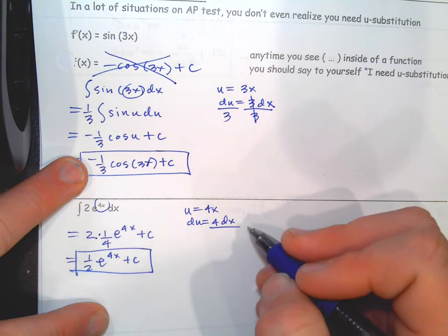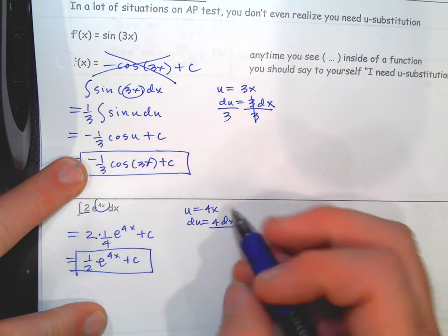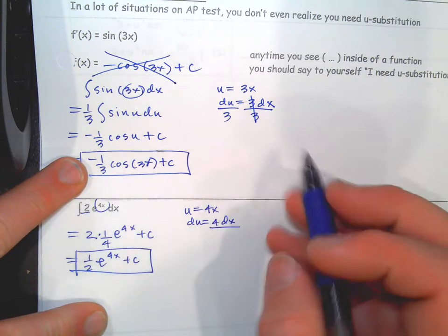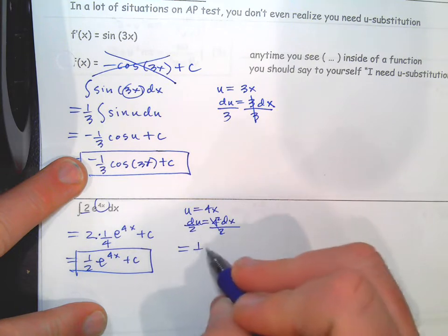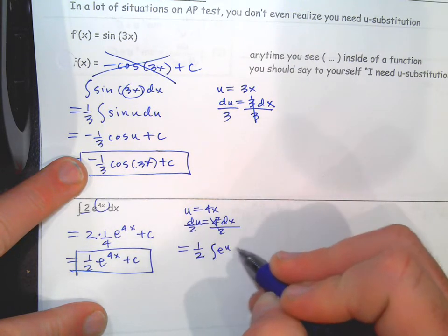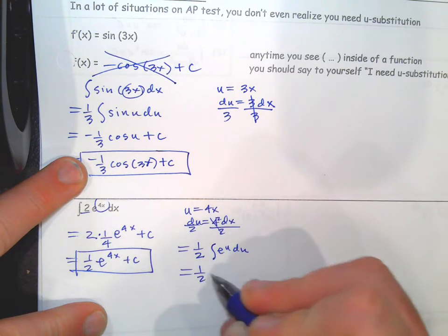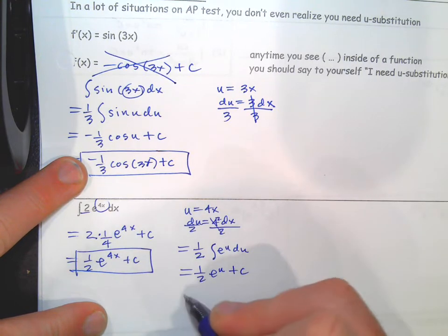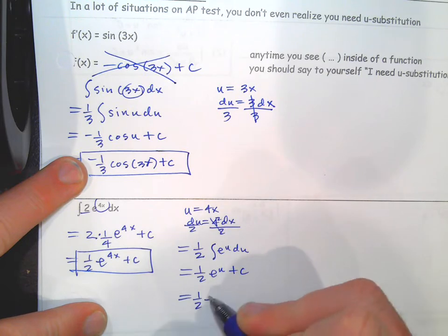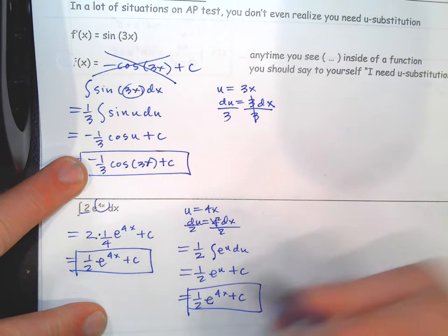Next one. Personally I'd just recognize there's a 2 out front, it's going to be e to the 4x, and there's going to be an extra 4 in front from the chain rule — so divide by 4, giving (2/4) = 1/2. The answer is (1/2) e^(4x) plus C.